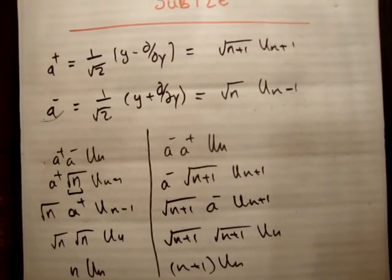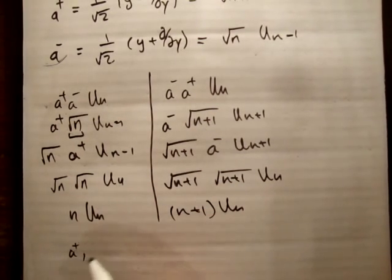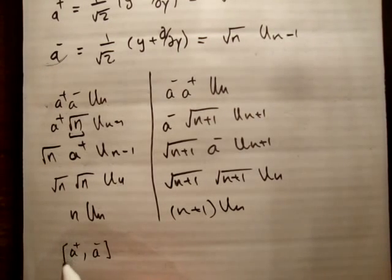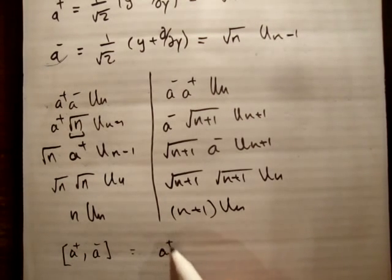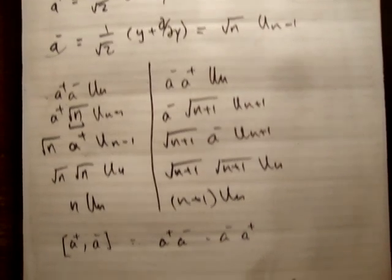Okay, so let's see. Let's just have a look at the commutator here. We know a plus, a minus, and a minus, a plus. So let's look at the commutator of a plus and a minus. That's going to be equal to a plus a minus minus a minus a plus.